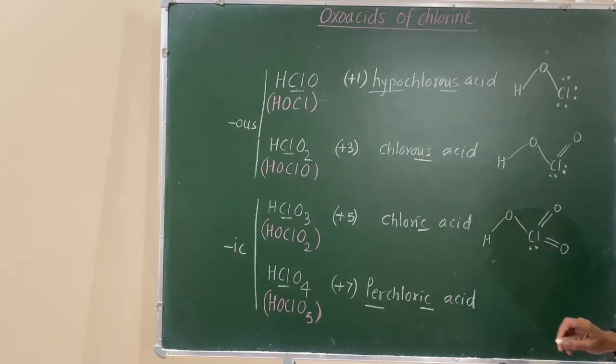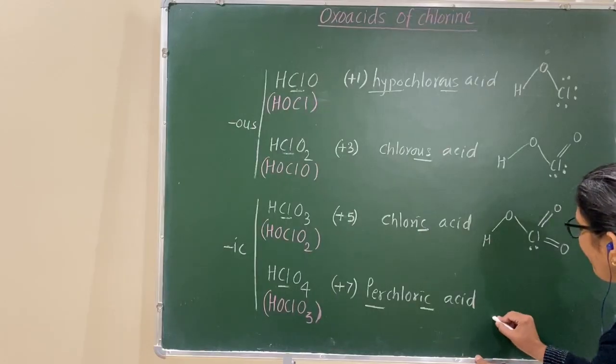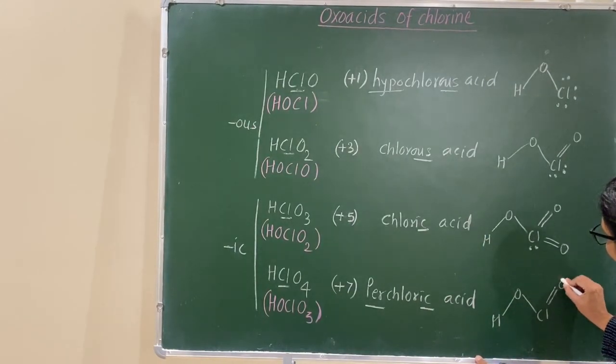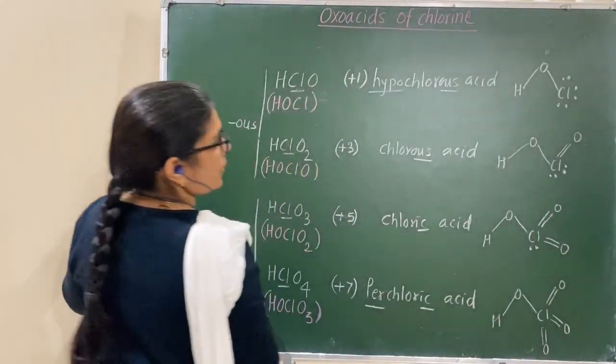HOClO2, remaining one lone pair. Then, HOClO3. These are the structures.